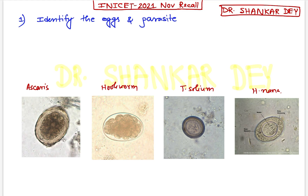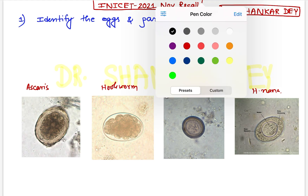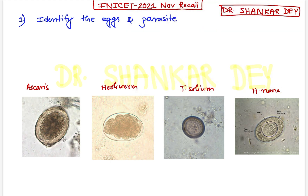This question was given in today's exam. They asked to identify the individual eggs. The options are like egg 1 Ascaris, 2 Hookworm, 3 Taenia, 4 Hymenolepis Nana. Alternative options are also given like 1 Hookworm, 2 Solium, 3 Nana, 4 Ascaris. So the answer is: this is Ascaris, this is Hookworm egg, this is Taenia, and this is Hymenolepis Nana.